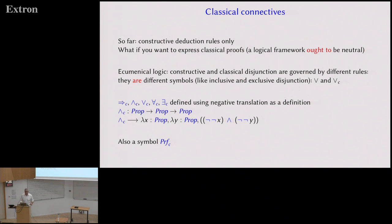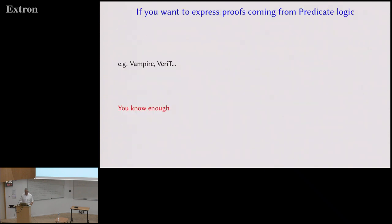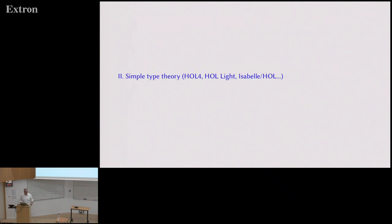Now imagine that for some reason you prefer to work in type theory rather than in predicate logic — maybe it is the case for some people in this room. Let's see how you can go one step further and express proofs coming from simple type theory. Simple type theory is also called higher-order logic, except that it's not a logic, it's a theory. It is implemented in HOL4, HOLLight, Isabelle/HOL, and so on.